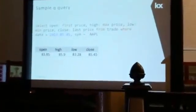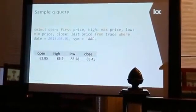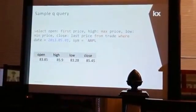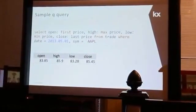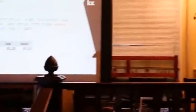Here's a sample Q query. For those familiar with SQL, it's not too much of a jump. We're doing a select where 'open' is defined as the first price — in SQL that would be 'first price as open' — just a minor syntax change. Then we filter where symbol equals backtick AAPL. The backtick is the symbol data type in Q, as opposed to a string or varchar in other languages.